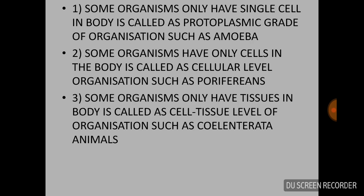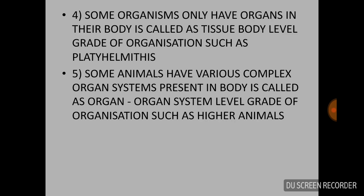To summarize the five levels: first, only one cell in body — protoplasmic grade; second, only cells — cellular grade; third, tissues present — cell-tissue level; fourth, only organs — organ level grade of organization; fifth, organ systems present — organ-system level grade of organization.